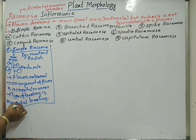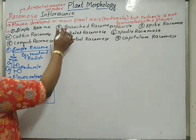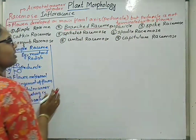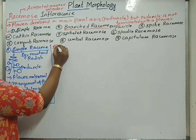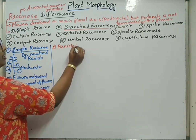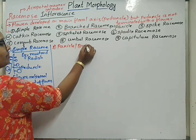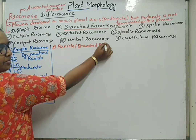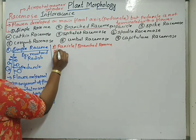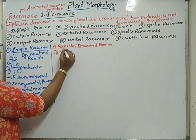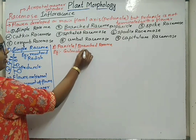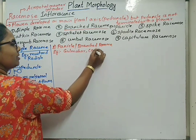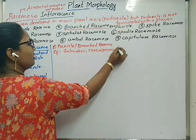Next, about the second type — branched raceme or panicle type of inflorescence. This type of inflorescence is seen in case of Caesalpiniaceae members and Gulmohar.